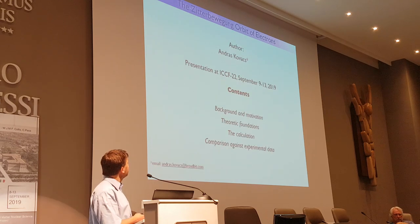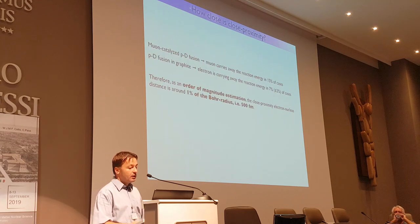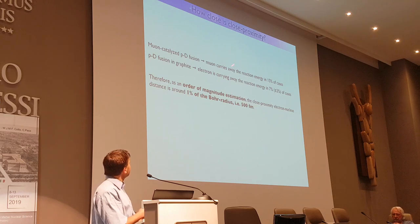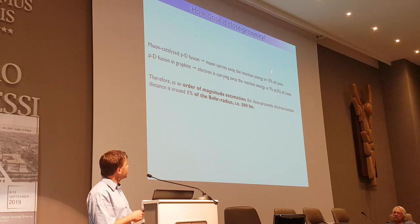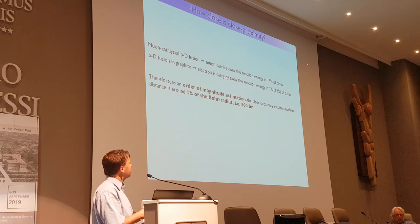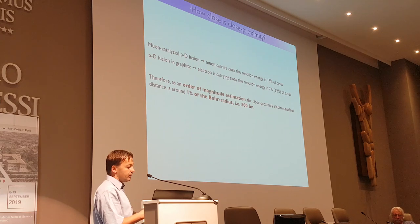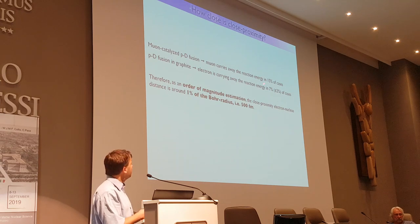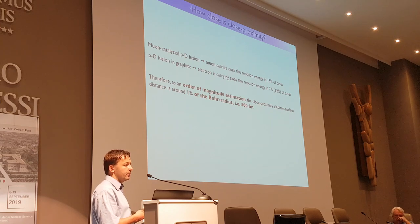From the data of the LiPo-Brushet study we can get a crude order-of-magnitude estimate of the wave function we are looking for. In muon-catalyzed fusion, the muon takes away reaction energy in 50% of cases and the muon is about 250 femtometers from the nucleus. In the LiPo-Brushet study, the electron took away energy in about 7% of cases. So as a crude interpolation, we are looking for an orbit that's about 500 femtometers.